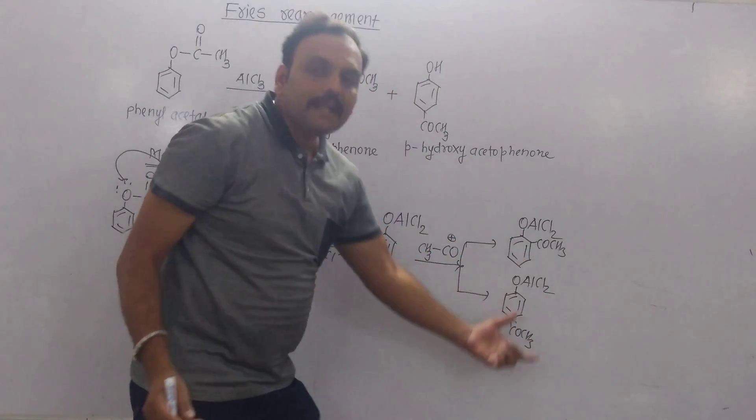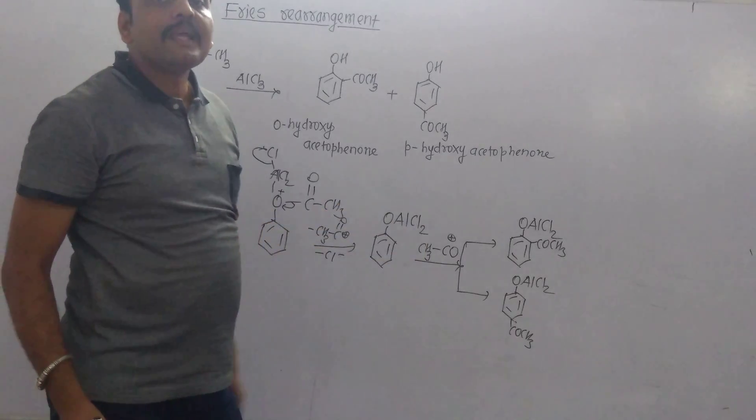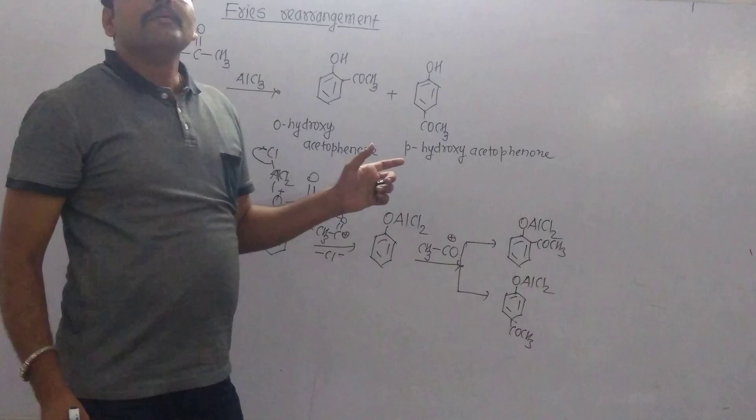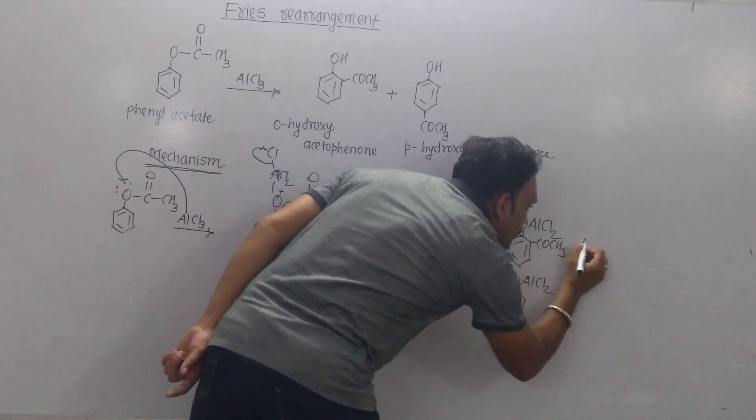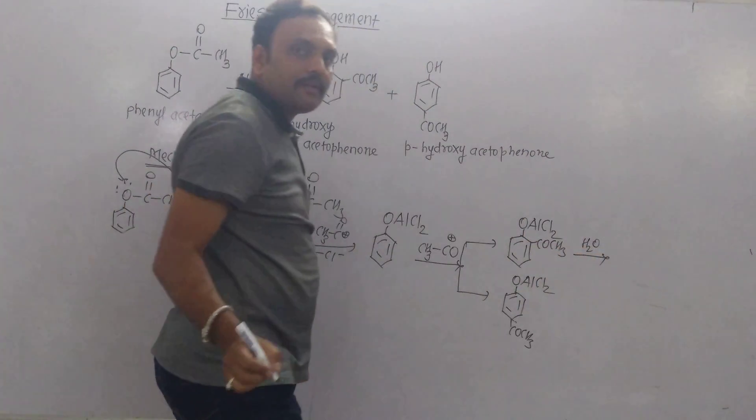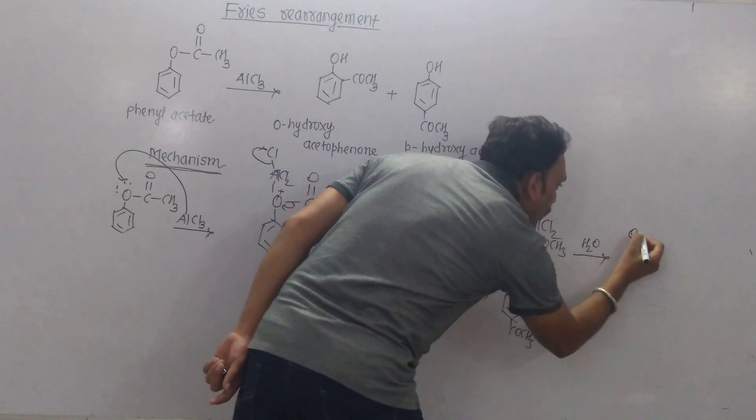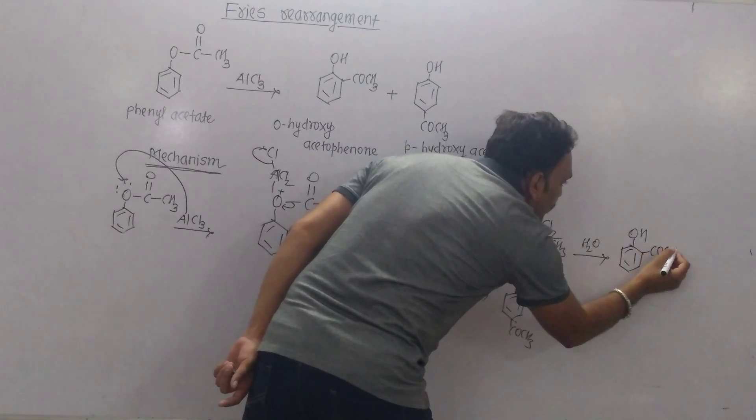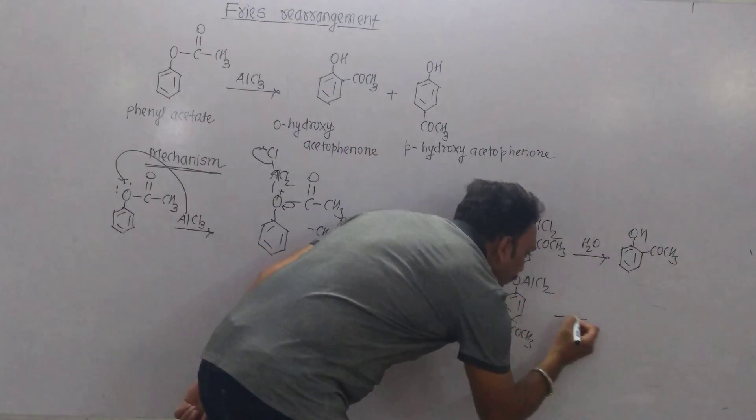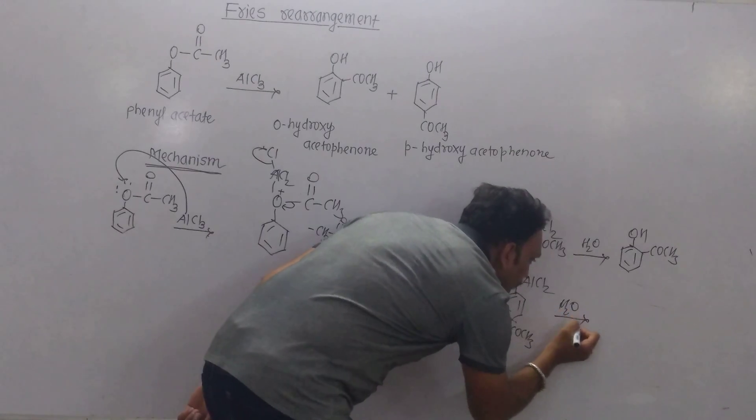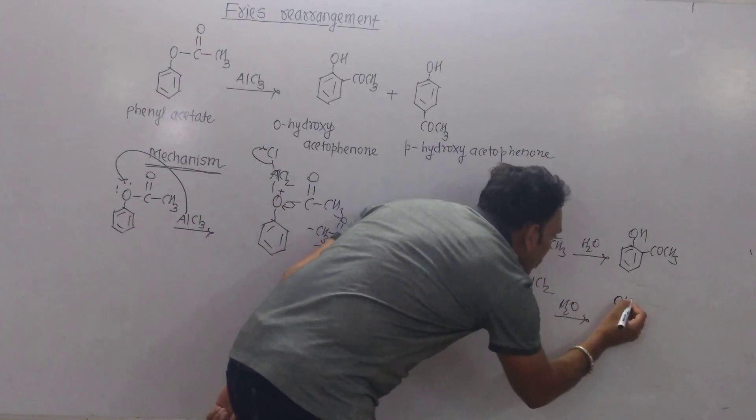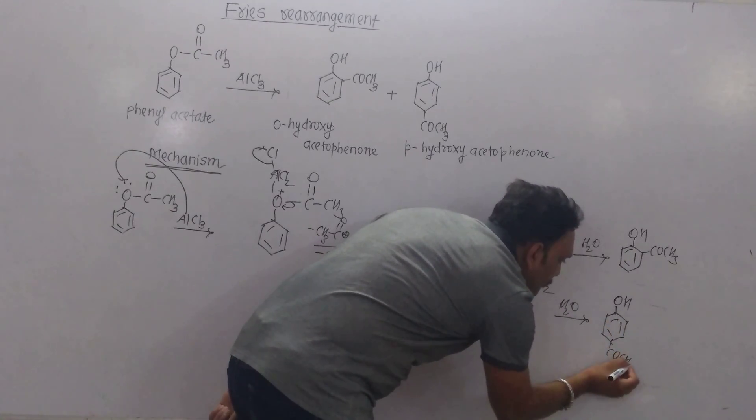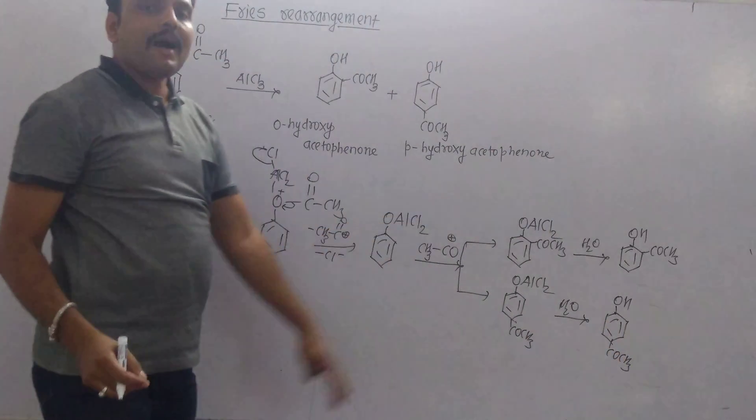These two intermediates need to be hydrolyzed to get our products. If this is hydrolyzed, the ortho-substituted product is obtained, which we call ortho-hydroxyacetophenone. And on hydrolysis of the para intermediate, we receive para-hydroxyacetophenone.